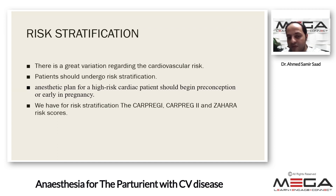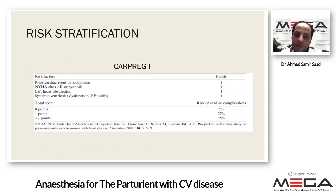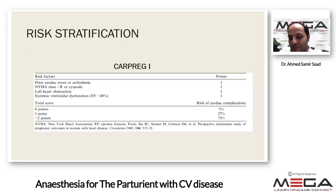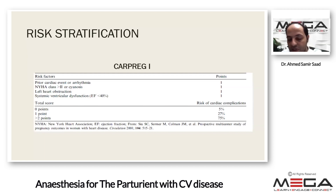The first is CARPREG-1. Risk factors include: prior cardiac event or arrhythmia (one point), New York Heart Association class more than two (one point), left heart obstruction (one point), and systemic ventricle dysfunction with ejection fraction less than 40% (one point). The second is CARPREG-2, where prior cardiac event or arrhythmia gives three points, NYHA class more than two or cyanosis gives three points, mechanical valve gives three points, ventricular dysfunction gives three points, high-risk left-sided valve disease gives two points, pulmonary hypertension gives two points, and coronary artery disease gives two points. A total score of more than four points corresponds to a 41% risk of cardiac complication.